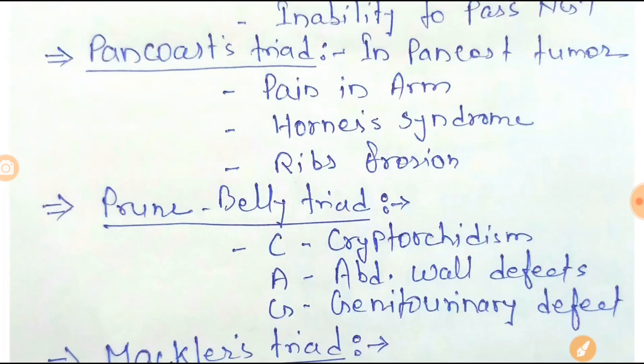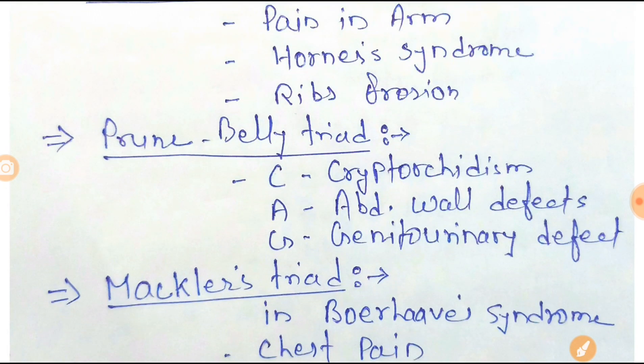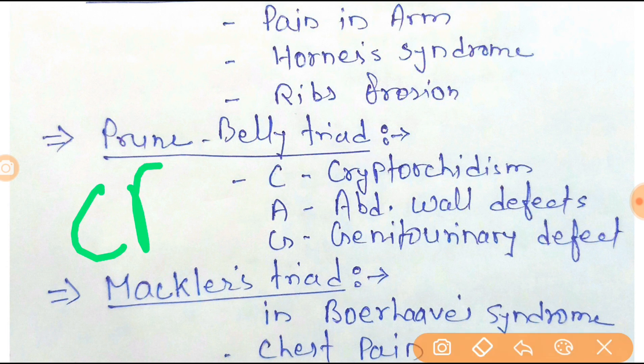Next one is the Prune Belly Triad. The trick is CAG: C for cryptorchidism, A for abdominal wall defect, and G for genitourinary defect. That is the Prune Belly Triad.